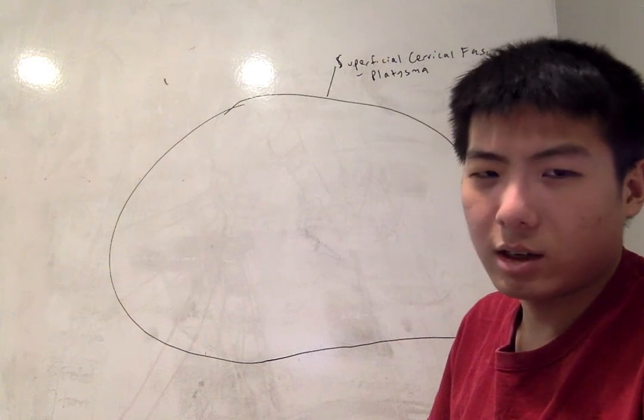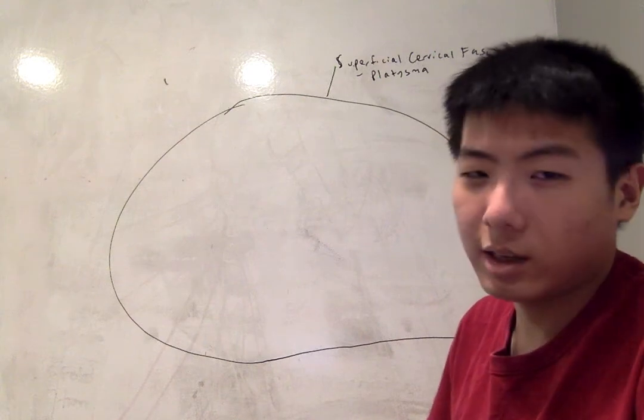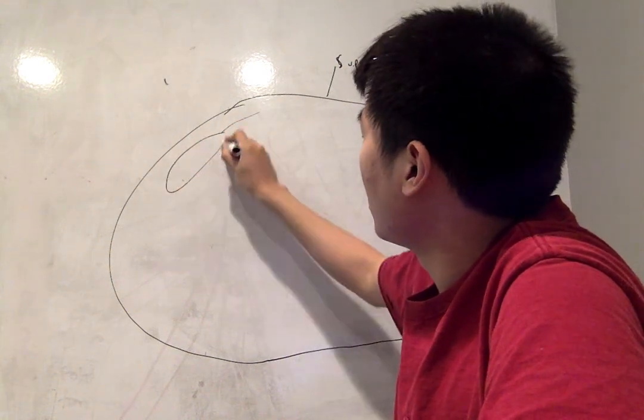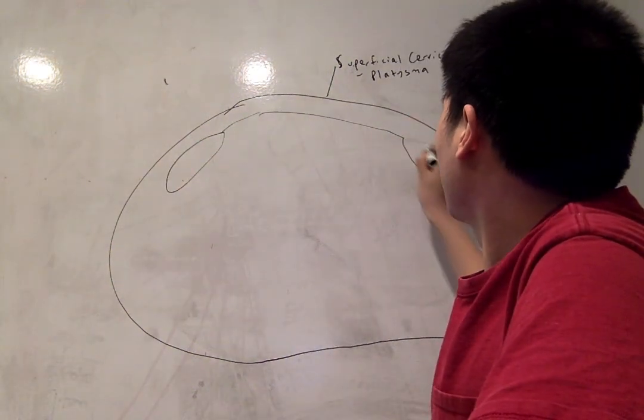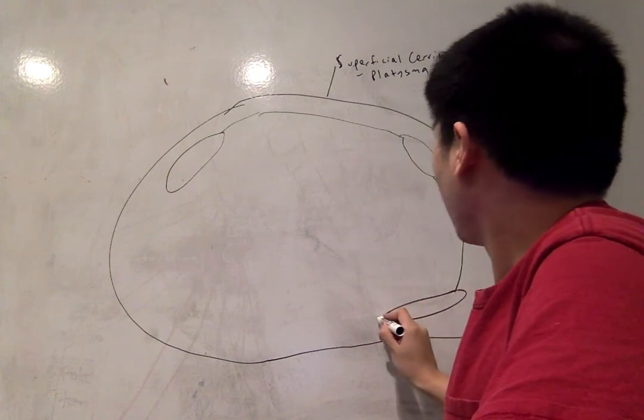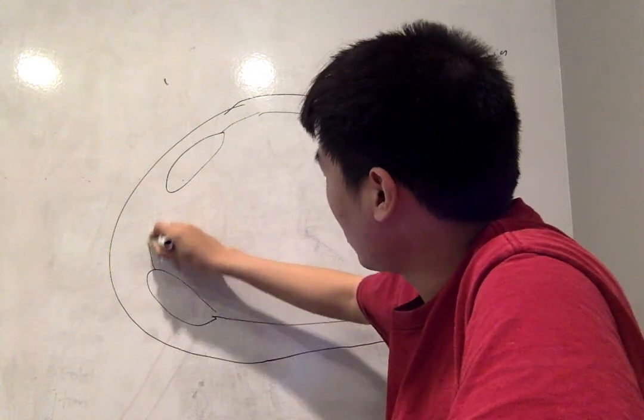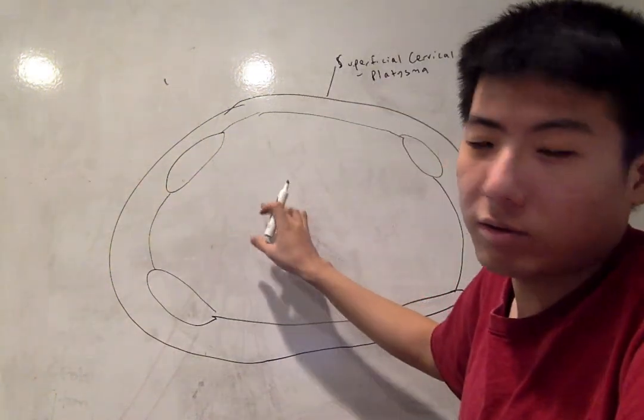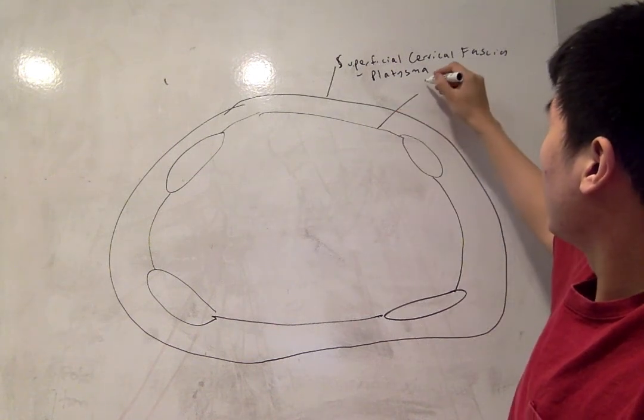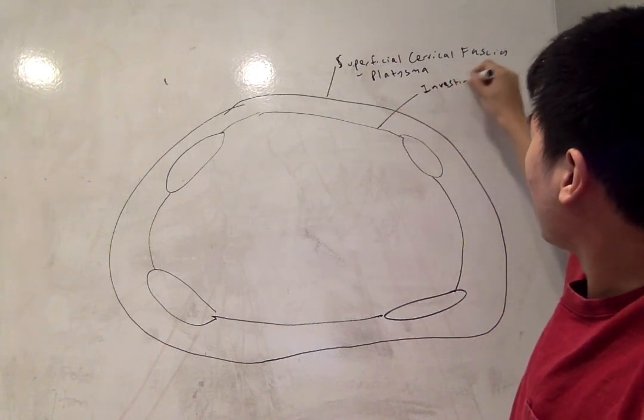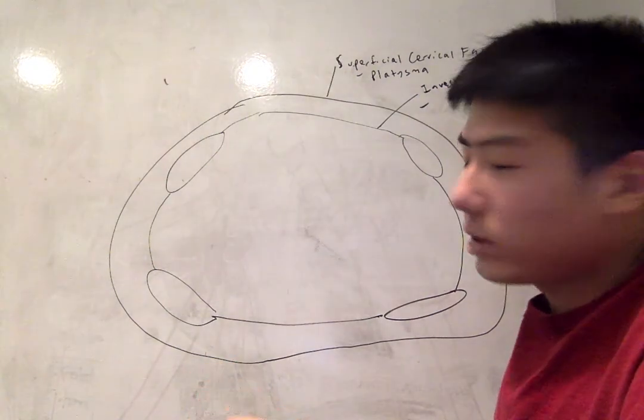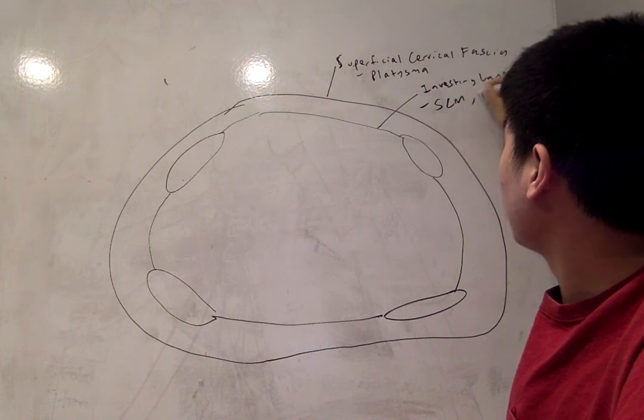Next up we have the investing layer of the deep fascia, which I'll draw with two pairs of muscles in the front and the back. So this is the investing layer.